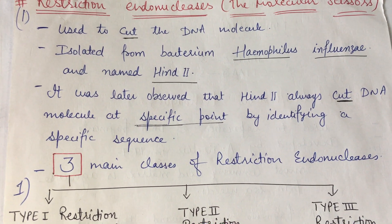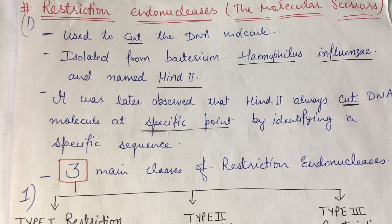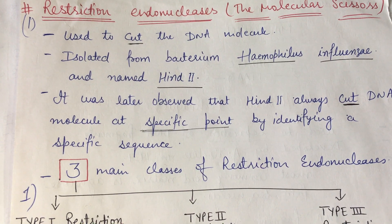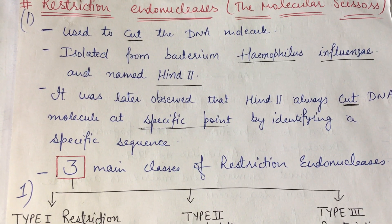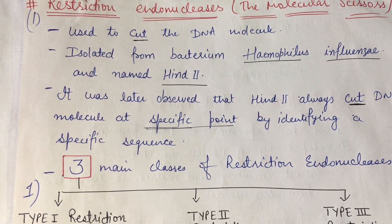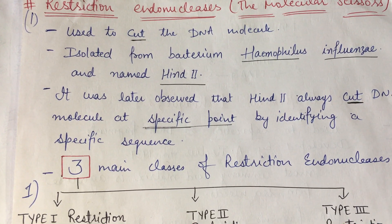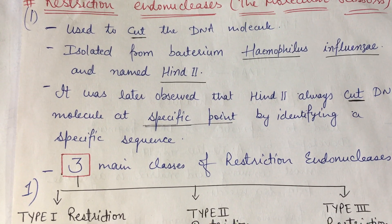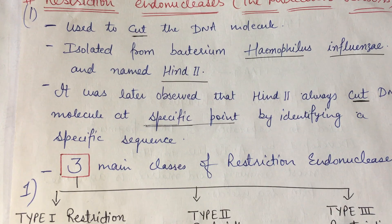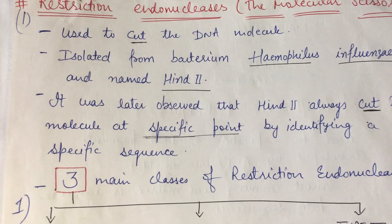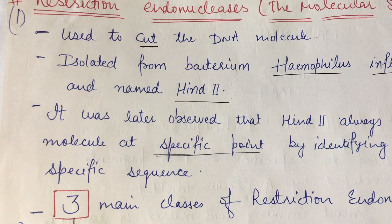Hello students, welcome back to my Bala channel. Today we will do restriction endonuclease enzymes, which are also known as molecular scissors. Restriction endonuclease enzymes are used to cut DNA molecules — they help to cleave or cut the DNA.